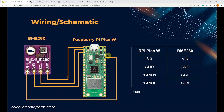For the wiring, I use my Raspberry Pi Pico W microcontroller, and I am using the standard I2C channel 0 pins, which are GPIO 0 and GPIO 1, assigned as SCL and SDA pins.